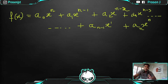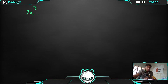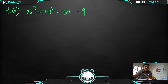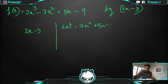Today we will learn only the division method — how to use the division method to divide polynomials. Let's take an equation: 2x³ − 7x² + 5x − 9. What you have to do is divide it using 2x − 3.